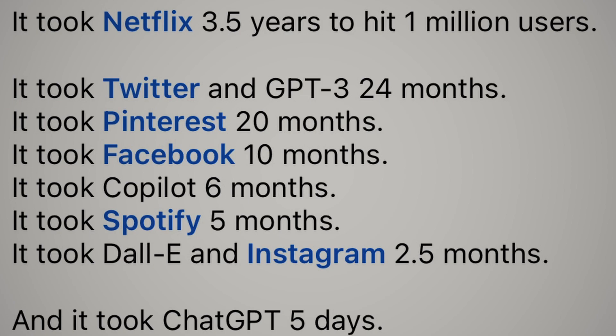ChatGPT reached one million users in only five days after its release — and just to put everything into perspective, this is the amount of time it took other apps to reach the same milestone. ChatGPT was developed by OpenAI, a company funded in 2015 by Altman, Elon Musk, and other Silicon Valley investors. Elon Musk recently stepped down from the board due to a conflict of interest with Tesla's autonomous driving research, but he's still a key investor and shares the excitement for this new app.